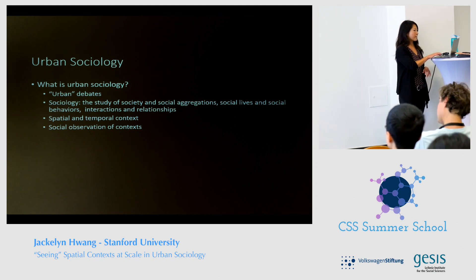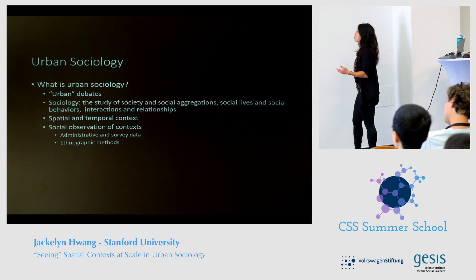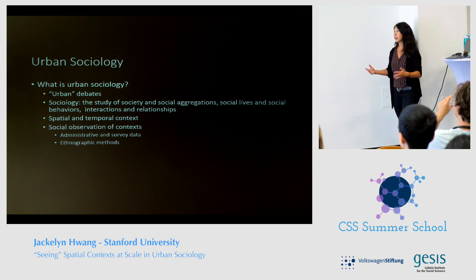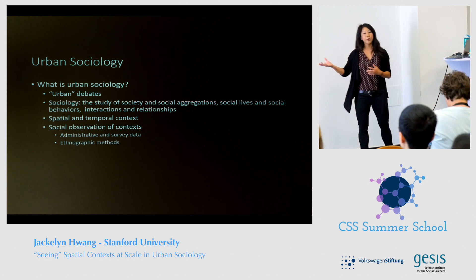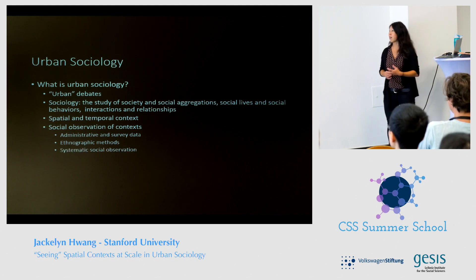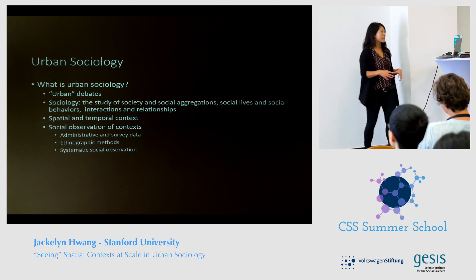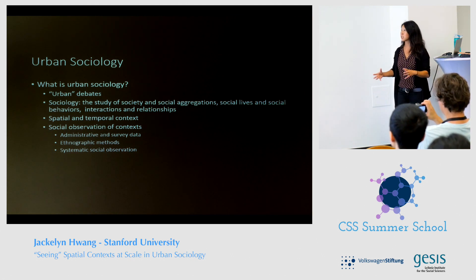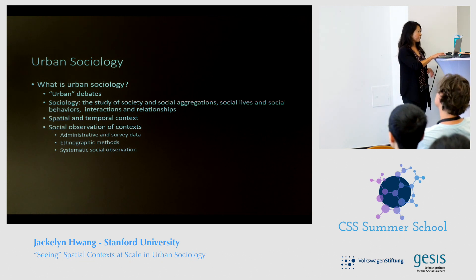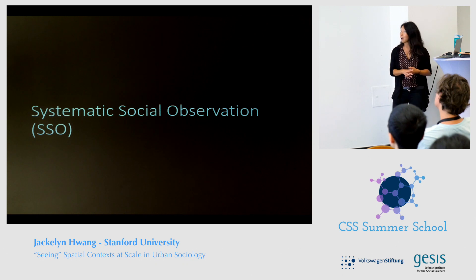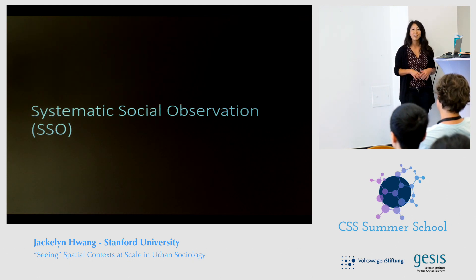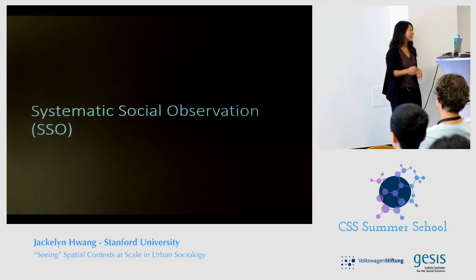To do urban sociology, we have to do some social observation of context to really understand place. Common approaches include administrative and survey data like the census, ethnographic methods, and systematic social observation — direct observation of physical conditions of places or social interactions. SSO has had a presence in urban sociology, but the data has been hard to collect, so it hasn't had as much of a presence as I think we can now have with multimedia data and big data.